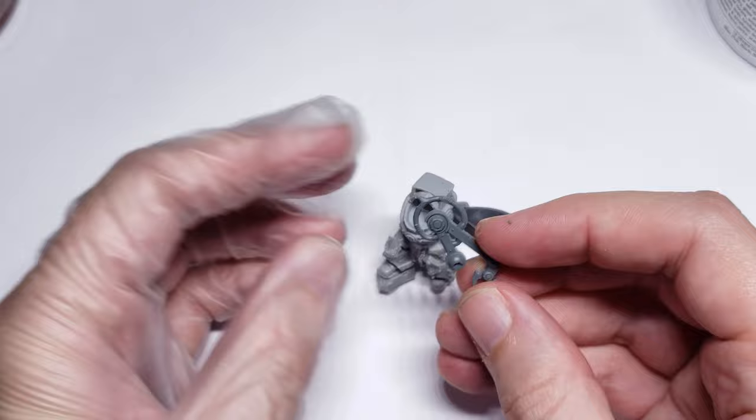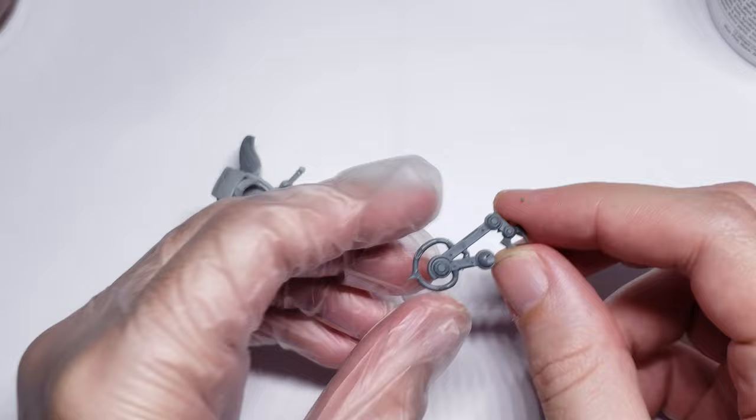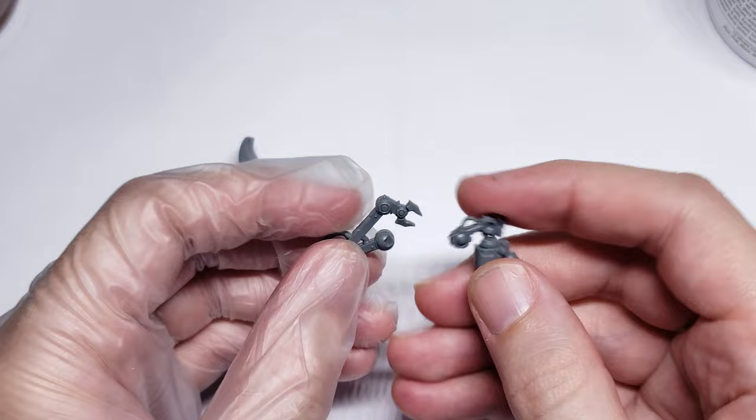To make the servo arm, all you're going to need is this servo arm from the Chaos Space Marine Havoc Missile Launcher, and this flamethrower bit from the Canicum Cataphron Destroyer kit.